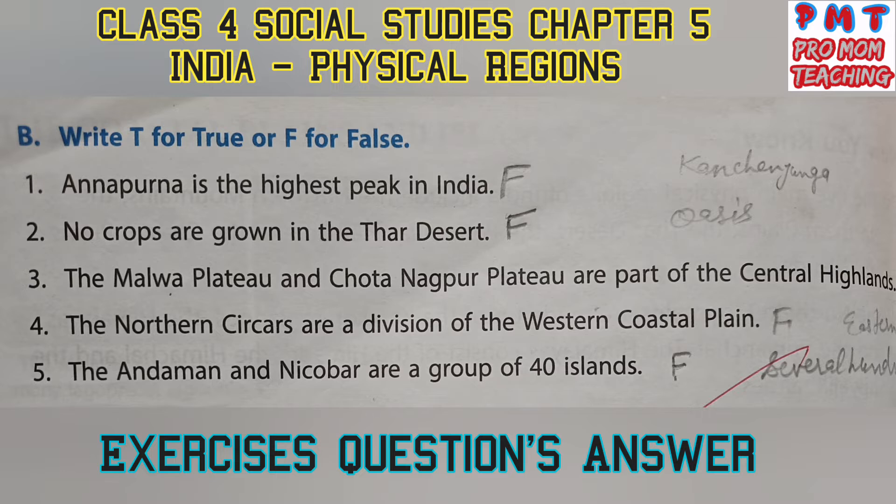Third: the Malwa Plateau and Chota Nagpur Plateau are part of the central highlands — yes, it is true. Fourth: the northern Circars are a division of the western coastal plain — it is false, because the northern Circars are a division of the eastern coastal plain, not the western coastal plain.